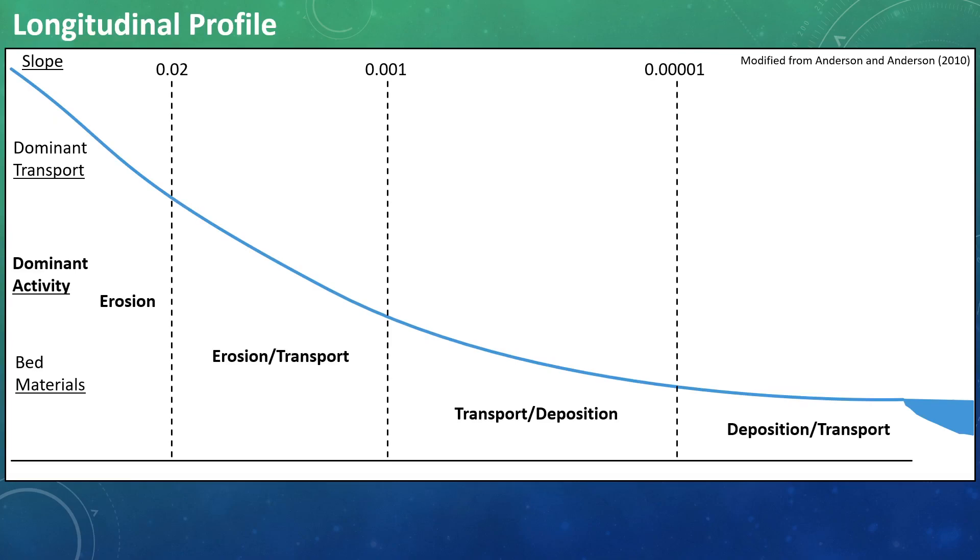Finally, we move into a depositional region, or primarily depositional, with some transport out of the system. Think of the lower Mississippi River of the United States, or its delta, or the same thing with the Nile in Egypt.